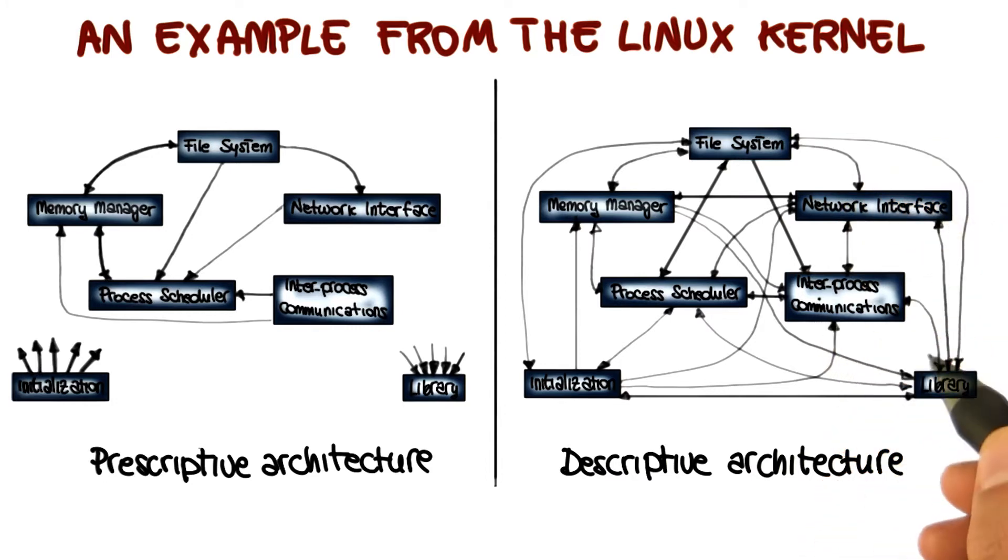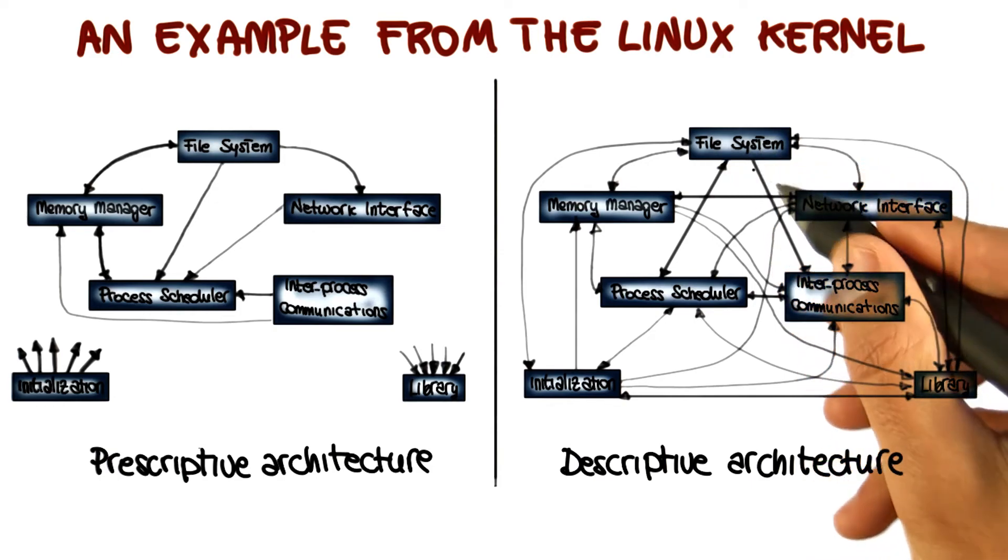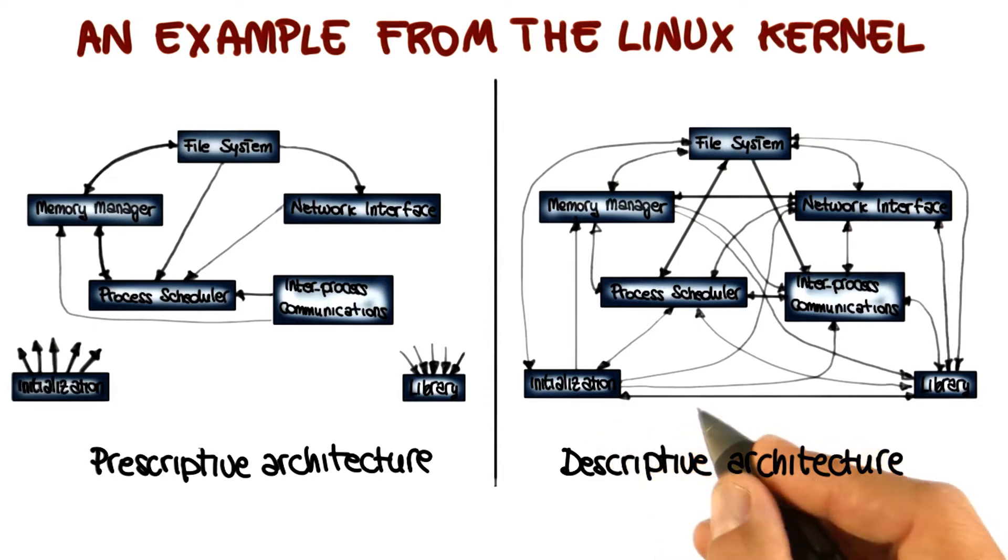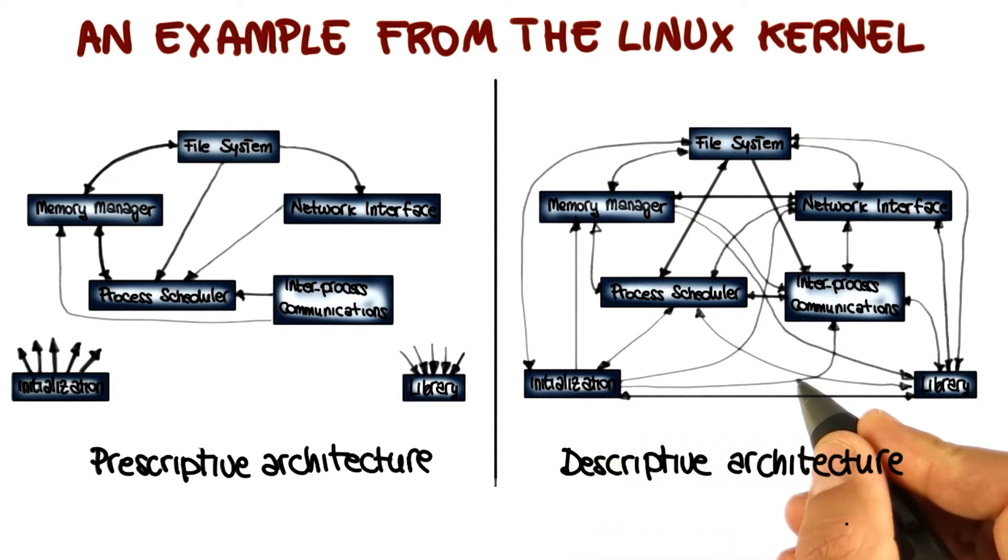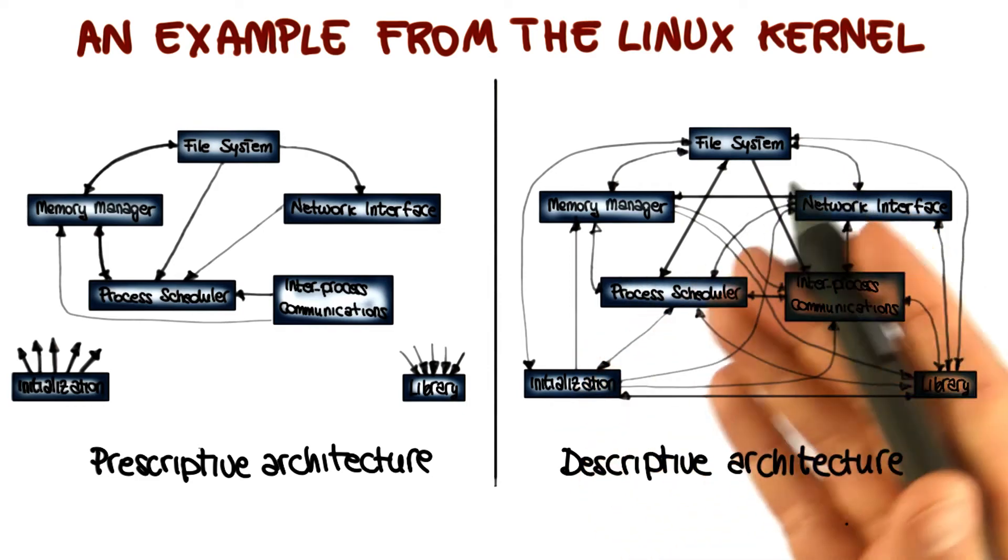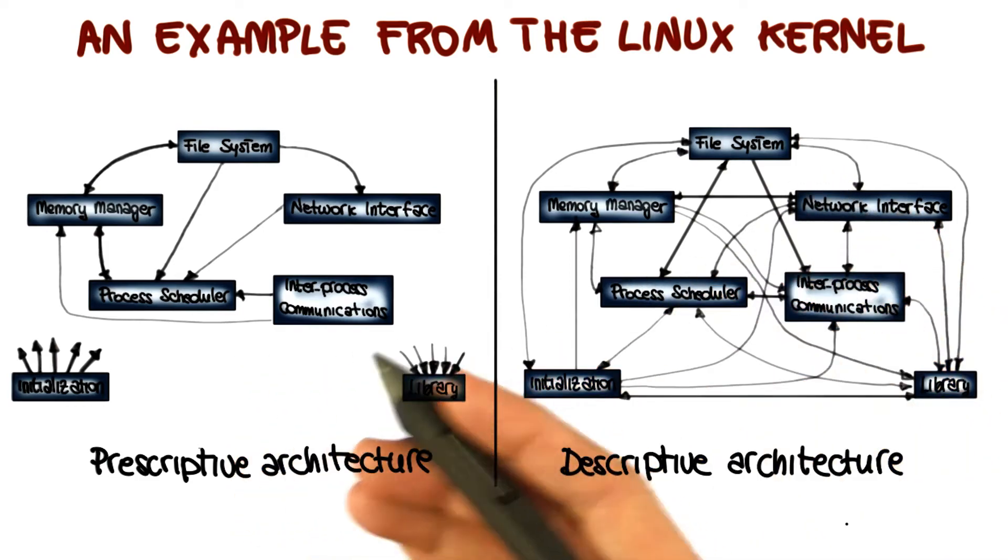Another thing that is kind of weird is the fact that the file system calls the kernel initialization code. So basically, the bottom line here is that not even the developers realized how the actual architecture of the system was, and how it was different from the architecture they had conceived.